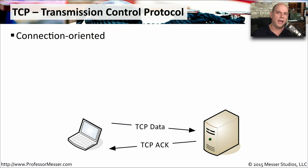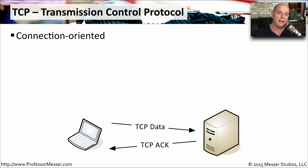Internet Protocol, or IP, uses two transport-level protocols to send information from one device to another. One of these protocols is called Transmission Control Protocol, or TCP. This is a connection-oriented protocol, meaning that you set up a formal connection with another device, send the information, and then tear down that connection when the communication is complete.